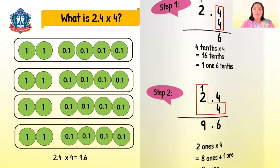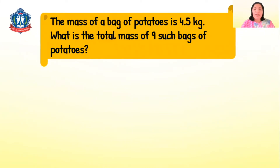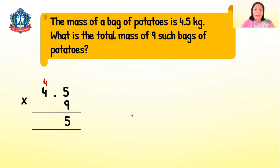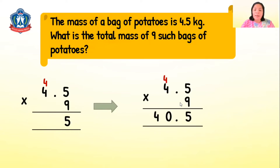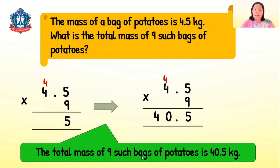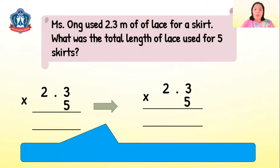Let's solve a word problem: the mass of a bag of potatoes is 4.5 kilograms. What is the total mass of nine such bags? So 4.5 times 9 — 5 tenths times 9 is 45 tenths. Regroup 40 tenths as 4 ones, carry the 4. Then 4 ones times 9 is 36, plus 4 is 40. So our answer is 40.5. The total mass of nine bags of potatoes is 40.5 kilograms.